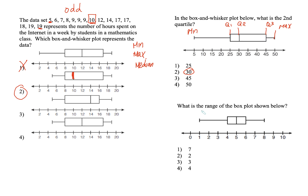This question asks: what is the range? Remember, the range is your greatest value minus your smallest value. 8 minus 1 is 7. That's your range. These questions are not that difficult.